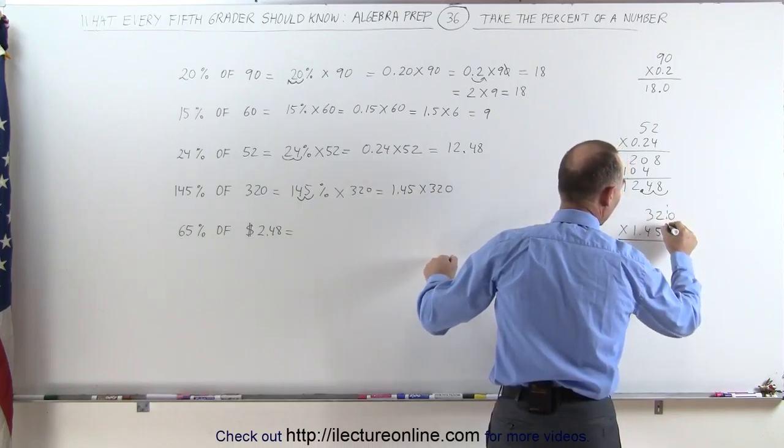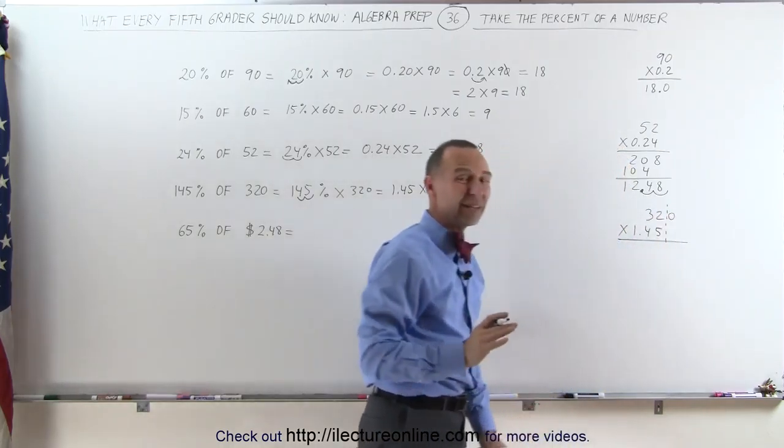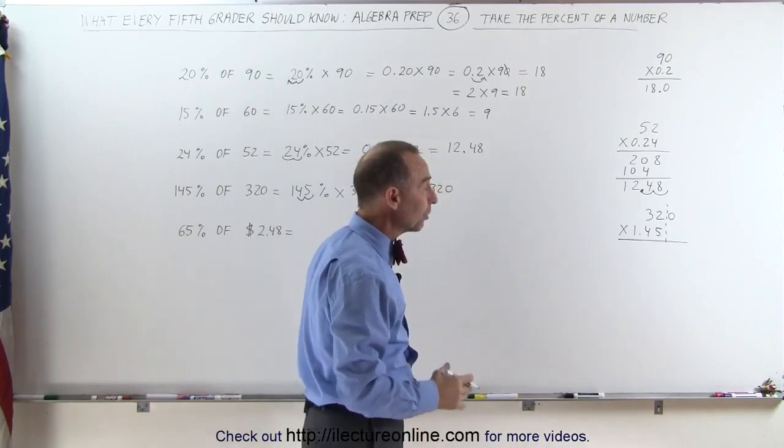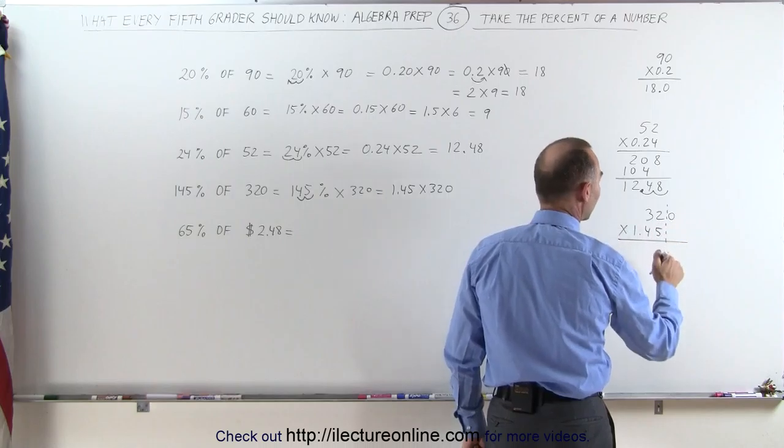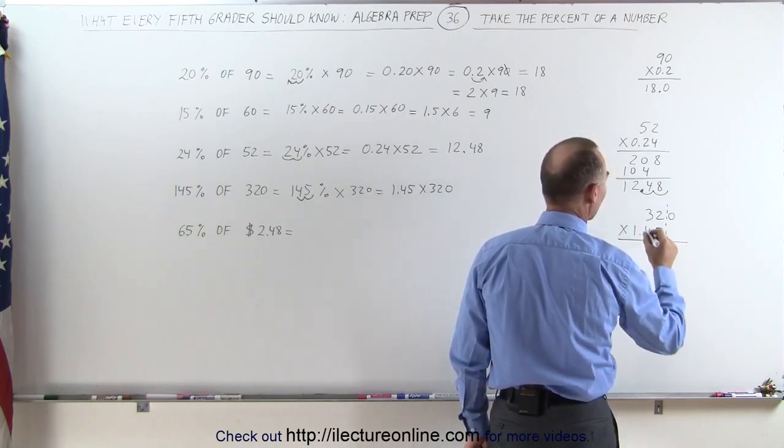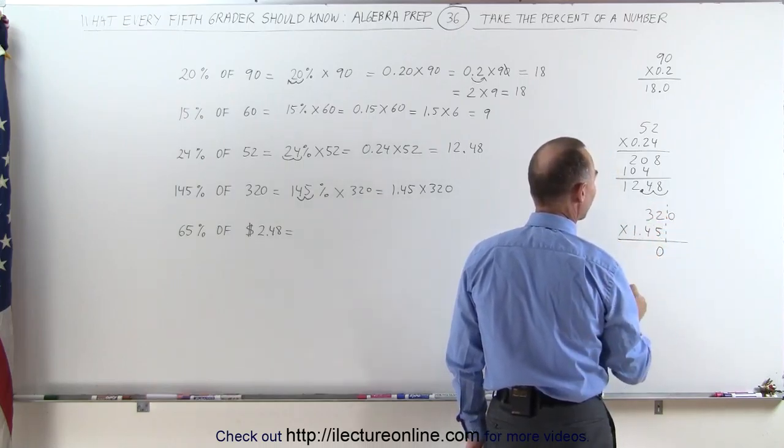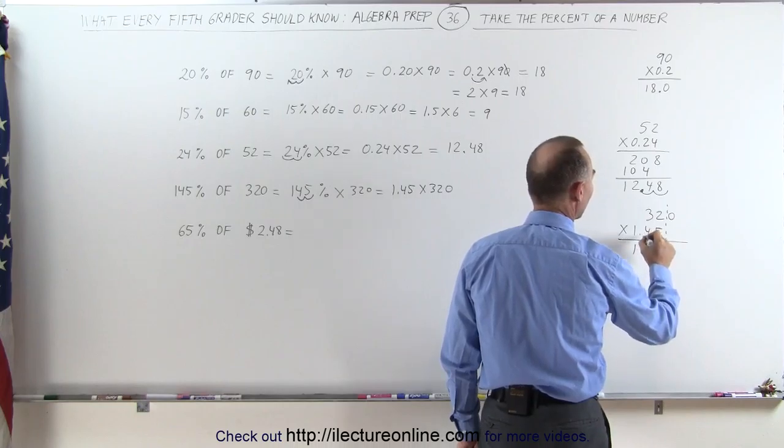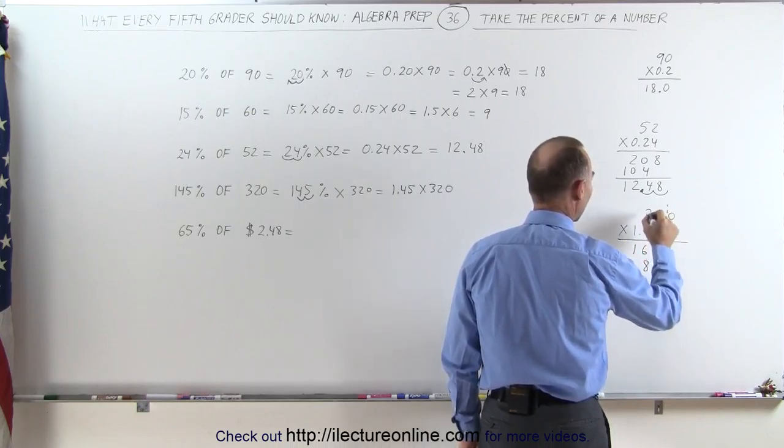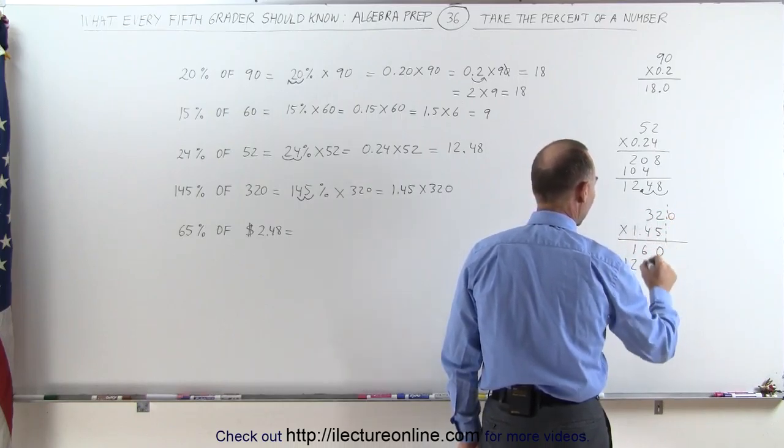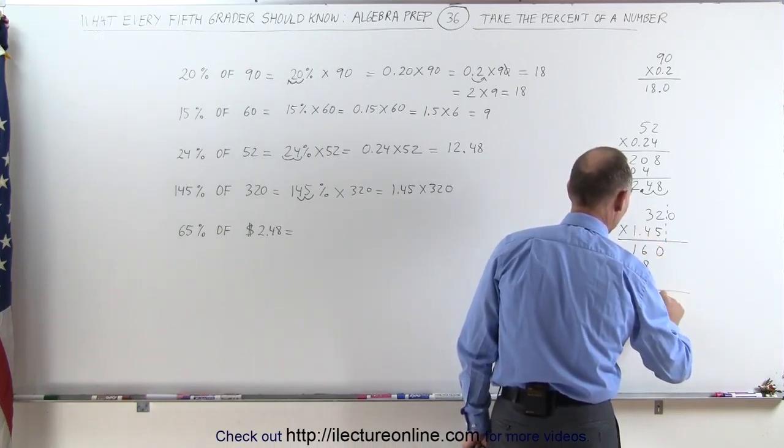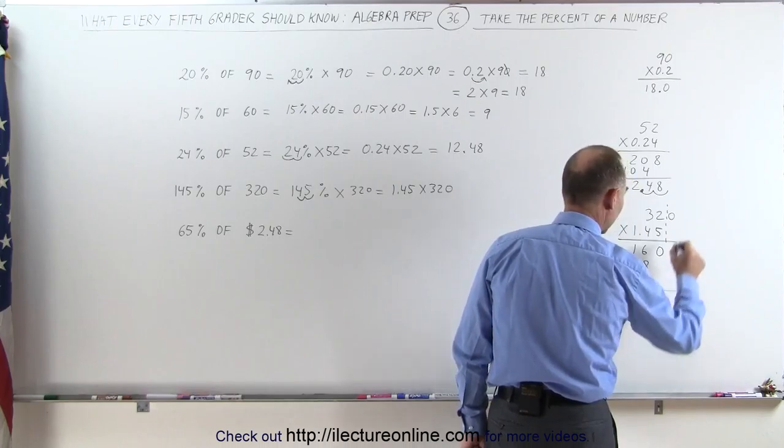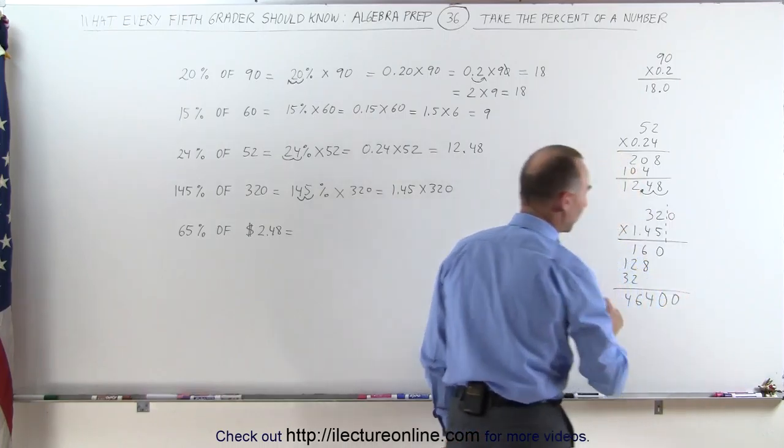Notice I put the zero there off on the side so I don't have to keep multiplying that by each of the numbers, but we can't forget about it—we have to add it at the end. 5 times 2 is 10, put down the zero, remember 1. 3 times 5 is 15 plus 1 is 16. 4 times 2 is 8, 4 times 3 is 12. 1 times 2 is 2, 1 times 3 is 3. Add it all together: 0, 4, 1, 6, and 4.